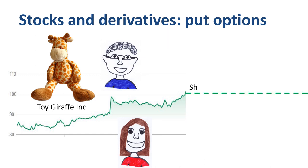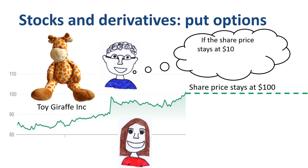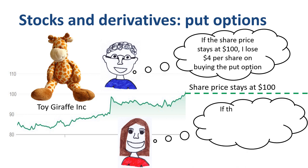If the share price stays at $100 until the expiration date, then John will not exercise his put option, as he has the right but not the obligation to do so. In this scenario, John loses $4 per share by having bought an option that he is not using, and Jane earns $4 per share from selling the put option.